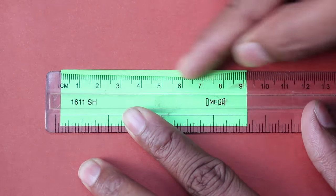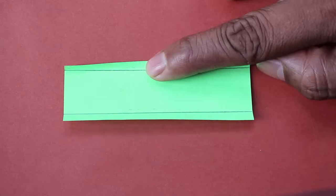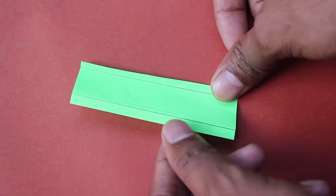Then with the help of a scale, fold both these edges. Remember to fold them in opposite directions to make a kind of Z shape.